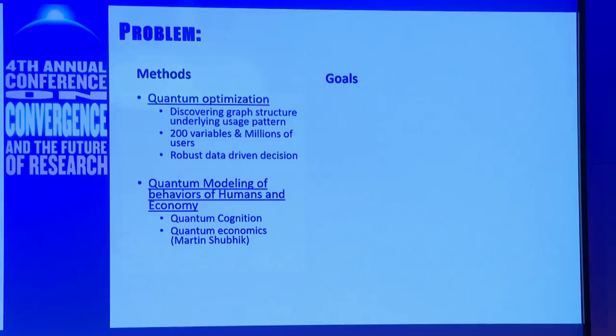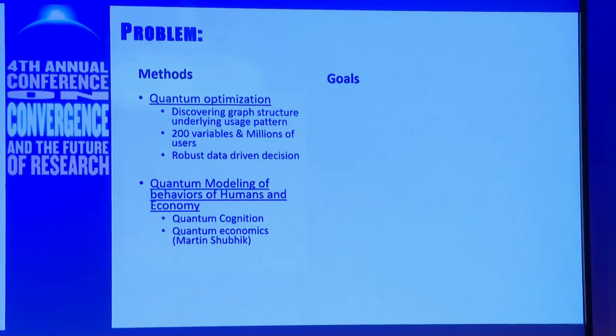There is a stream called quantum cognition. The idea is that when we use traditional probabilistic models to model behavior, it turns out we can't explain all behaviors very well, and we then label them as irrational behavior. Increasingly, people have been able to show that when you use quantum probabilistic models, you are able to show better prediction. There is a stream of work run by a faculty member at IU emphasizing significantly on quantum cognition.